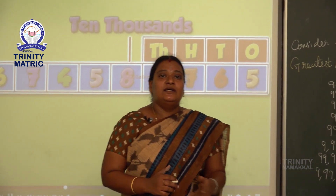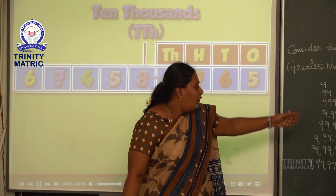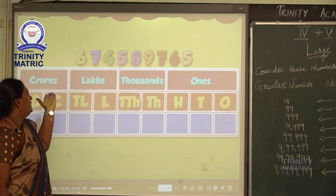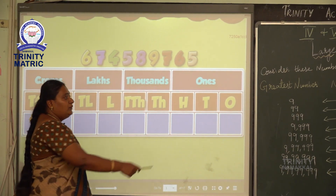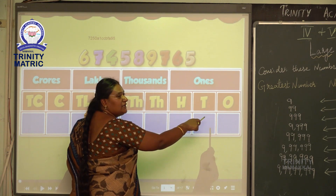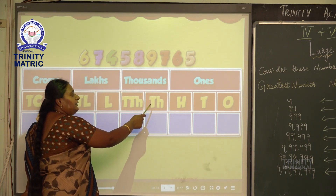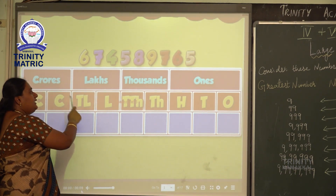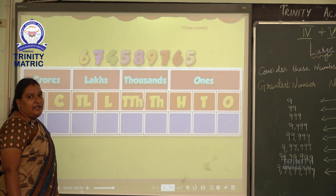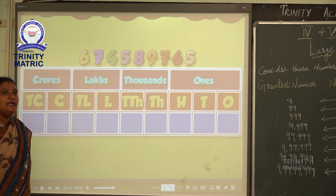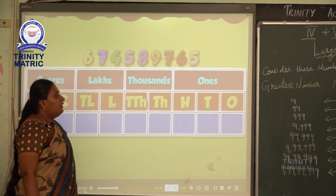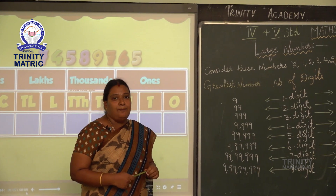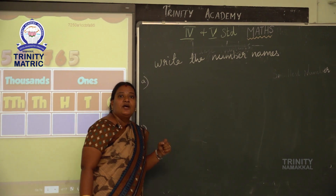Now children, we are going to see the Indian place value system. We are going to write the number names for large numbers using the Indian place value system. Here, 1s, 10s, and 100s belong to the units family. Then 1,000 and 10,000 belong to the thousands family. Lakhs and 10 lakhs belong to the lakhs family. Crore and 10 crore belong to the crore family.